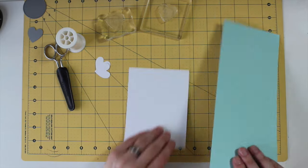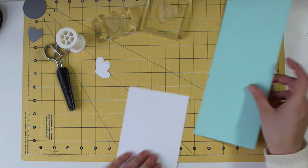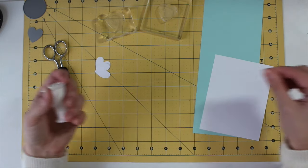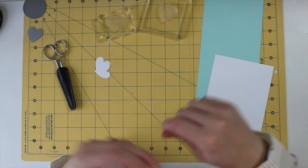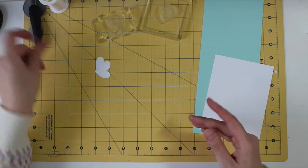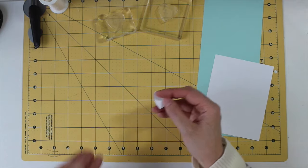So to start with today I have an A2 Aquamist card base. I have a panel of 4 1/4 by 5 1/2 cardstock, some basic sewing thread, nothing special, and some nice sharp scissors, and a couple of die cuts.